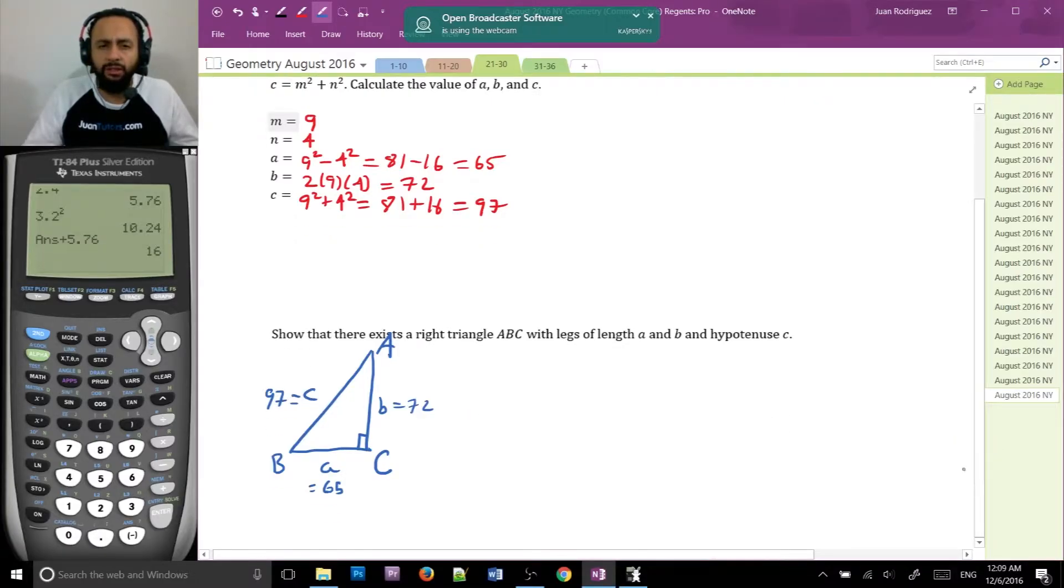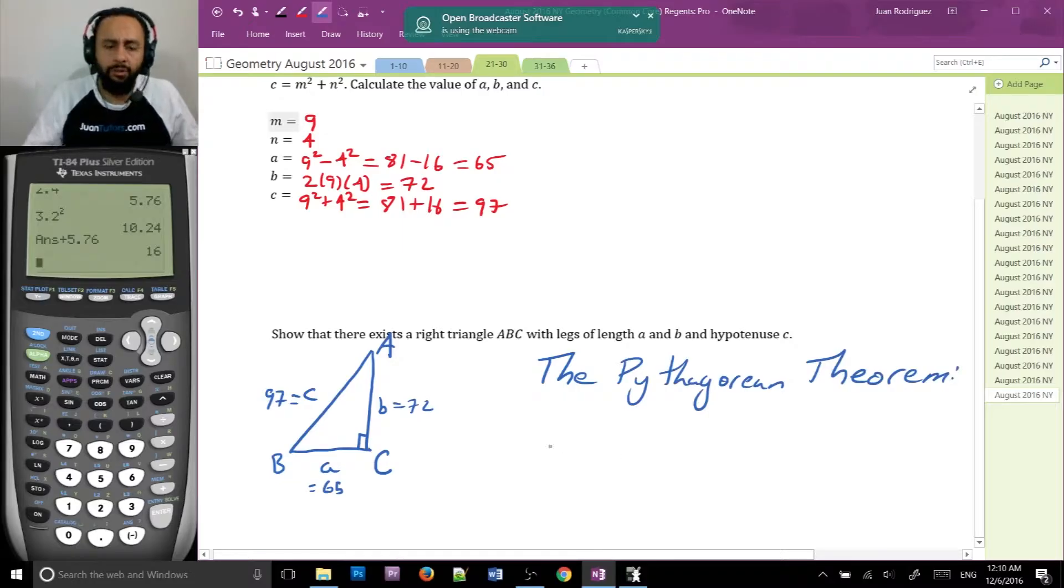So it seems like these numbers are so far out there. Well, how do I show that there exists such a right triangle? I can't just draw it and say, hey, it's a right triangle. But I got to verify it. How do I verify it? Well, we have a convenient theorem called the Pythagorean theorem that should verify it.